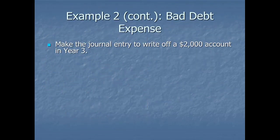We're going to wrap up this example here with just a couple more steps. The first is, let's make the journal entry to write off a $2,000 account in year three. And again, we said a write off. That's where we actually close an account. So what we do, we're going to use up some of that allowance.